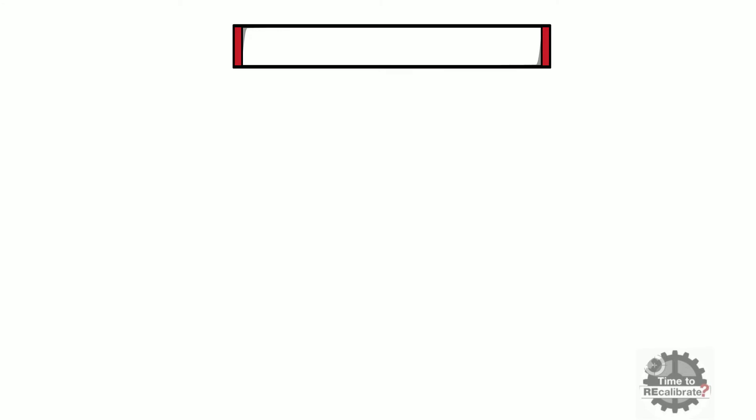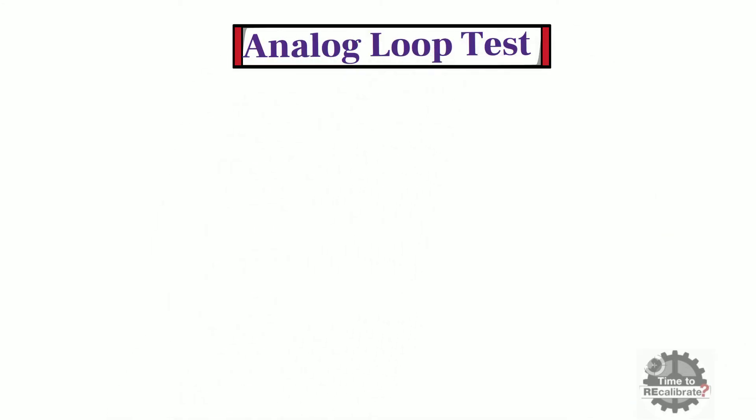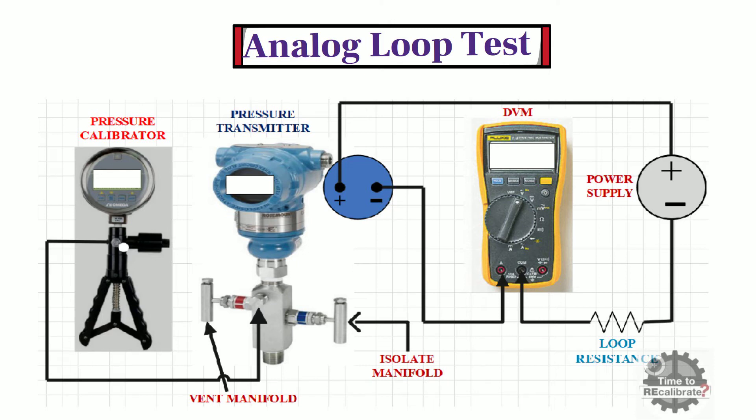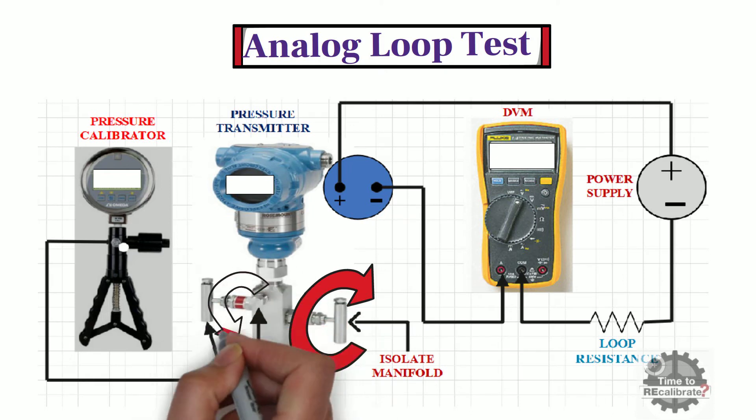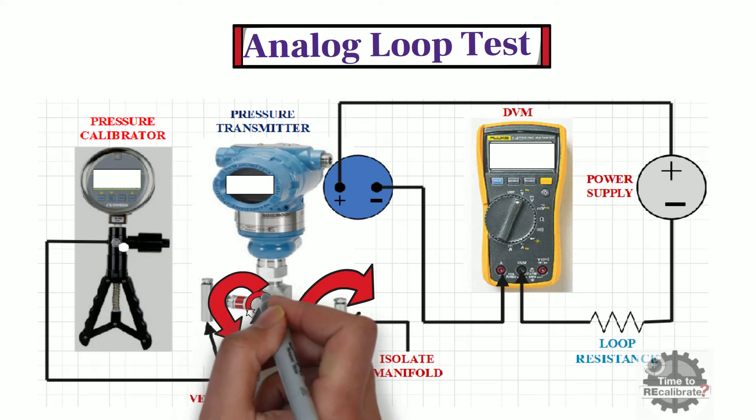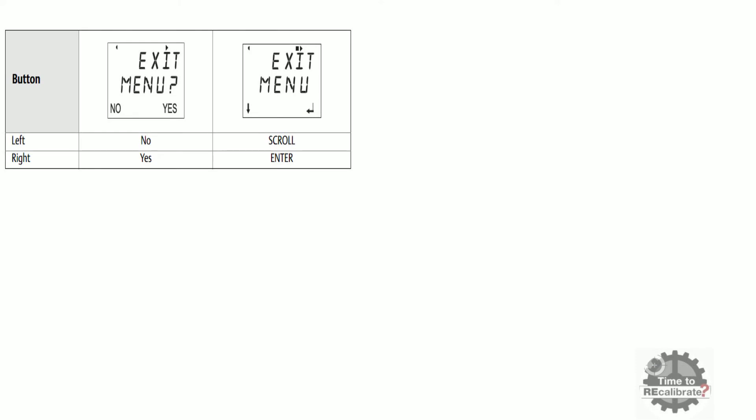Now, let's learn how to perform analog loop test. First of all, isolate pressure transmitter from process before performing analog loop test. In order to isolate transmitter from process, close the isolation valve, then open the vent valve, and finally open the drain port of transmitter.